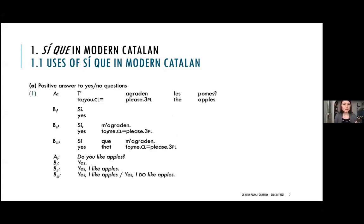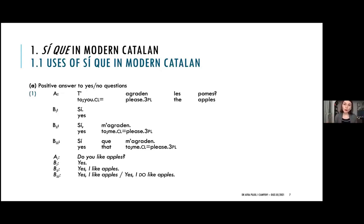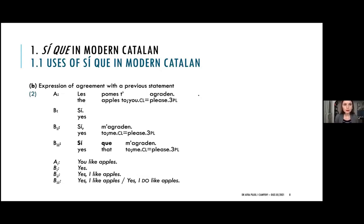Let's have a look at some examples of how SICA may be used as a positive answer to yes/no questions. Take 'Do you like apples?' — there are different ways to answer that you do like apples. One is simply to use C as an affirmative particle. We can use C with content of the clause that I'm assuming is being elided, as we will see later on, or we can simply use SICA, as we can see in B3. SICA can have an emphatic or a neutral reading, but that would be at the prosodic level.